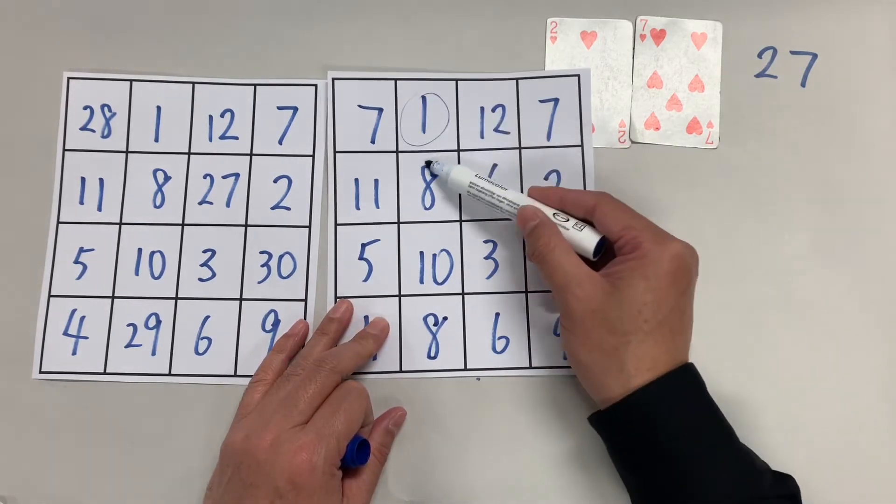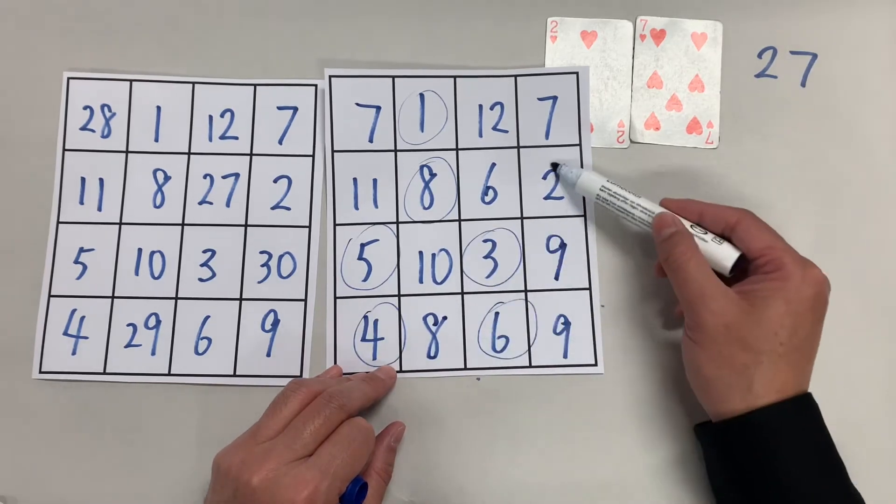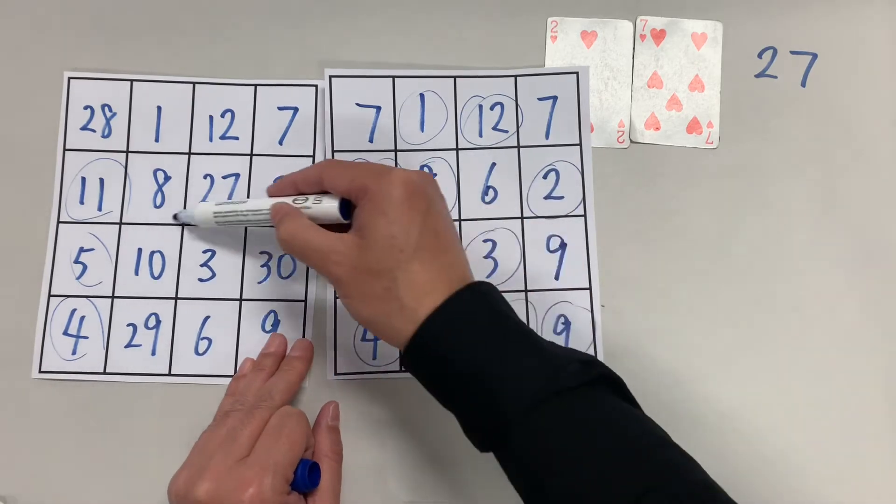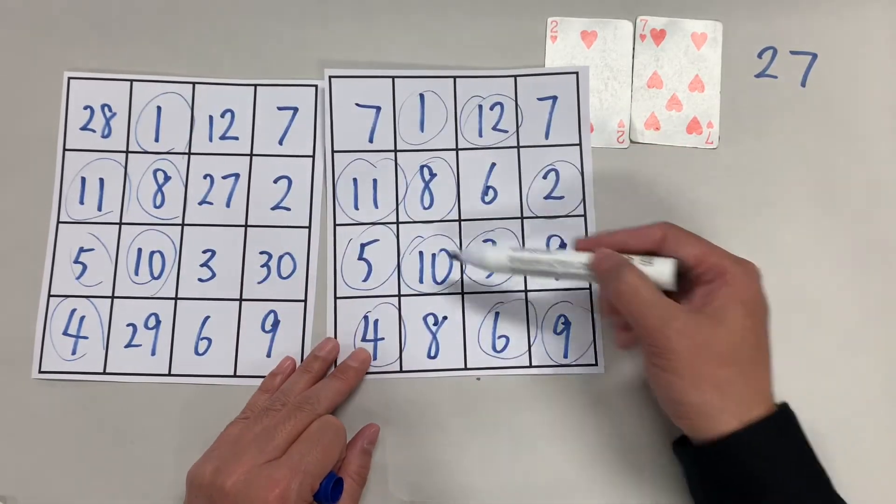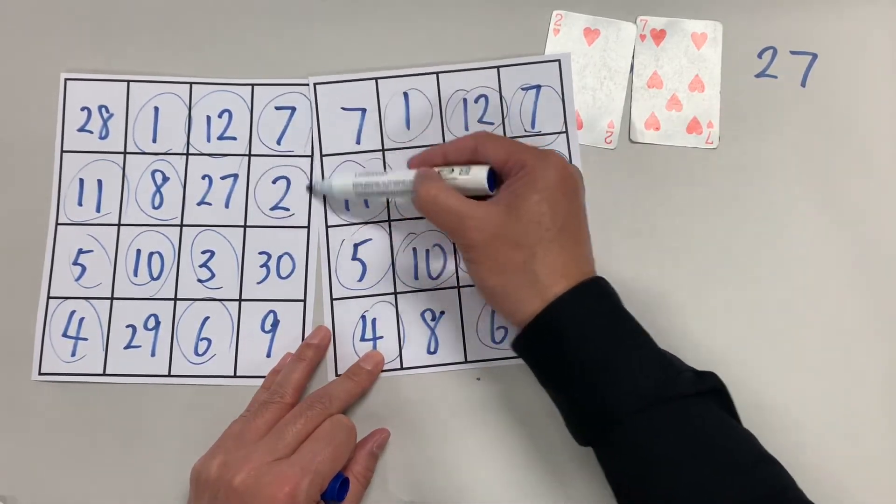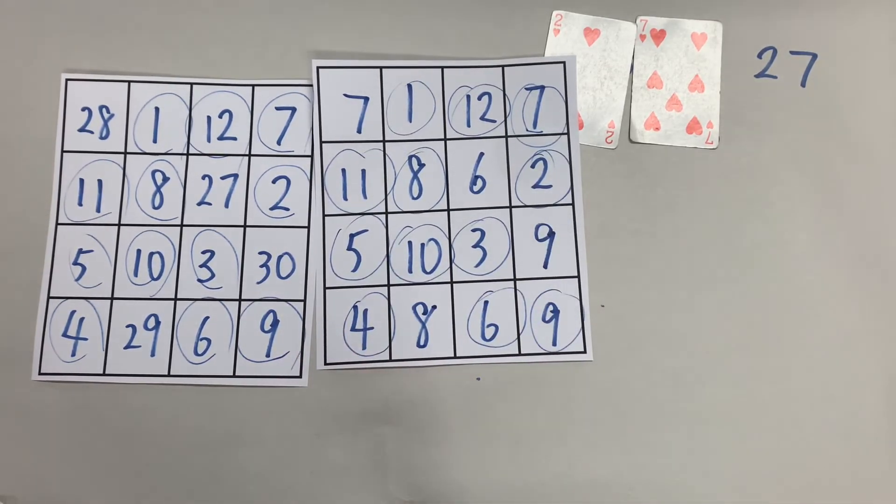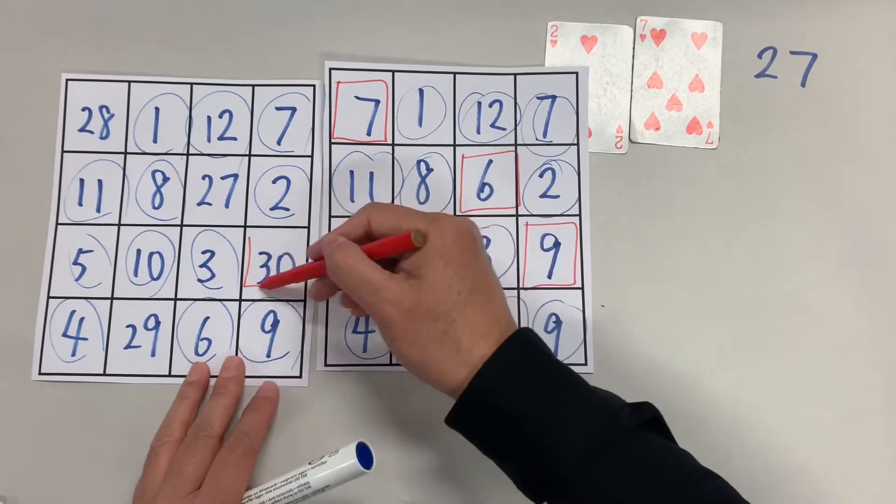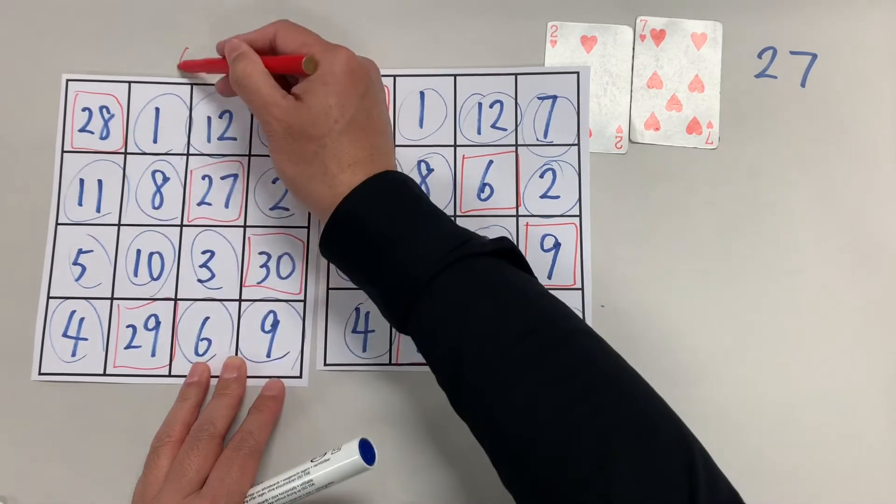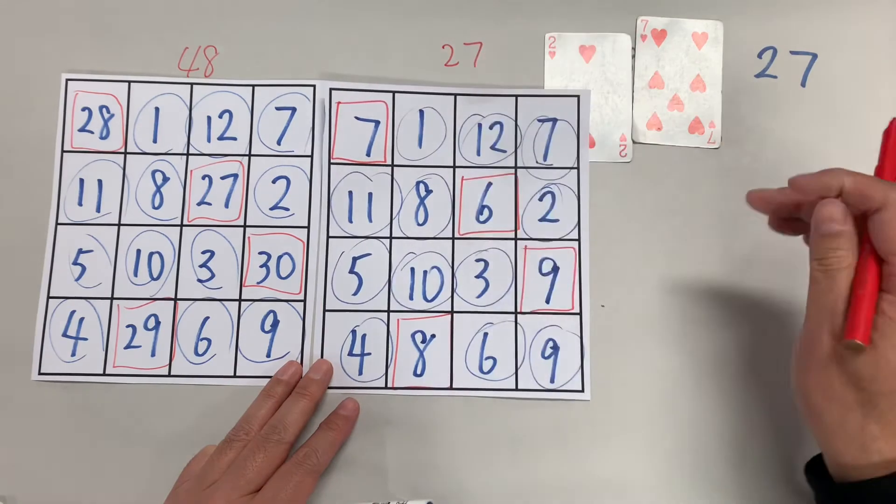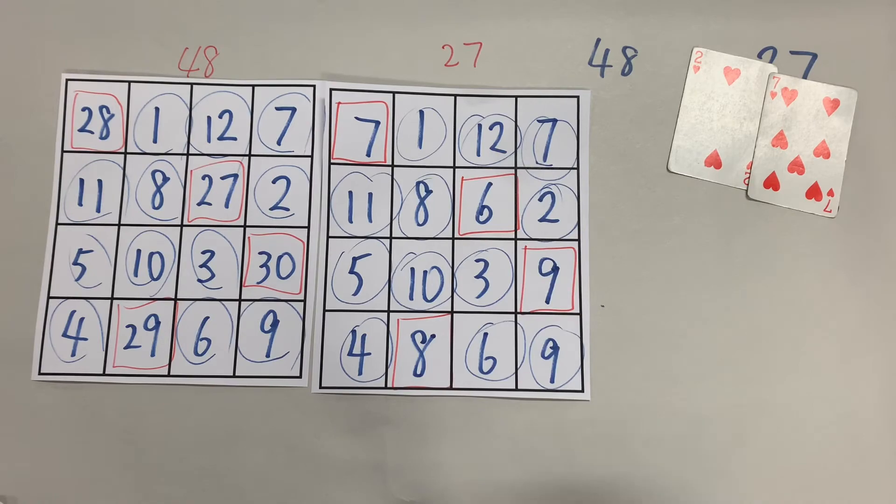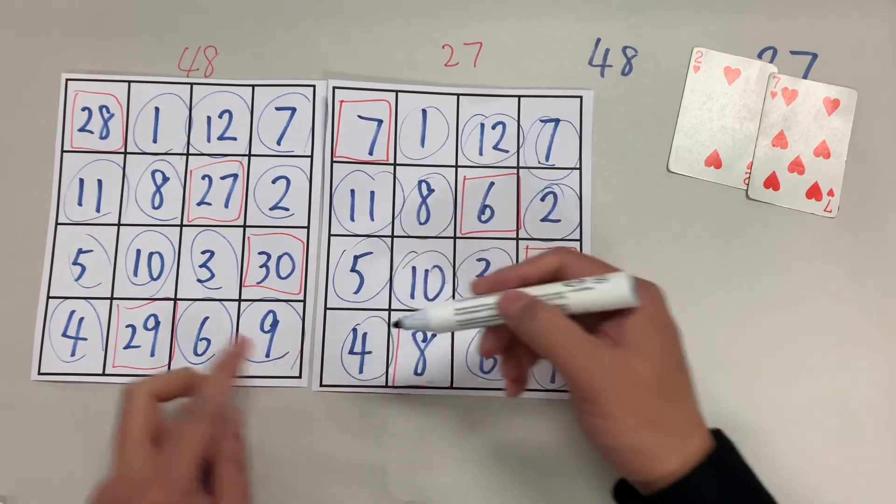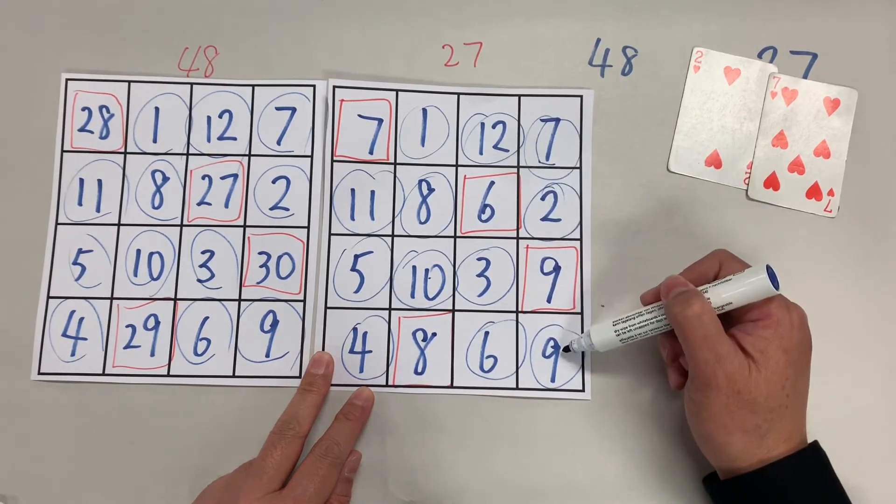Yes, you're quite right. These numbers match: 11, 5 and 4; 8 and 10; 1 and 8 and 10; 12, 3 and 6; 7, 2 and 9. So this was for 48, this is for 27. It still works. So what's happening is, as long as you remember these numbers: 11, 5, 4, 1, 8, 10, 12, 3, 6, 7, 2, 9, this part here.